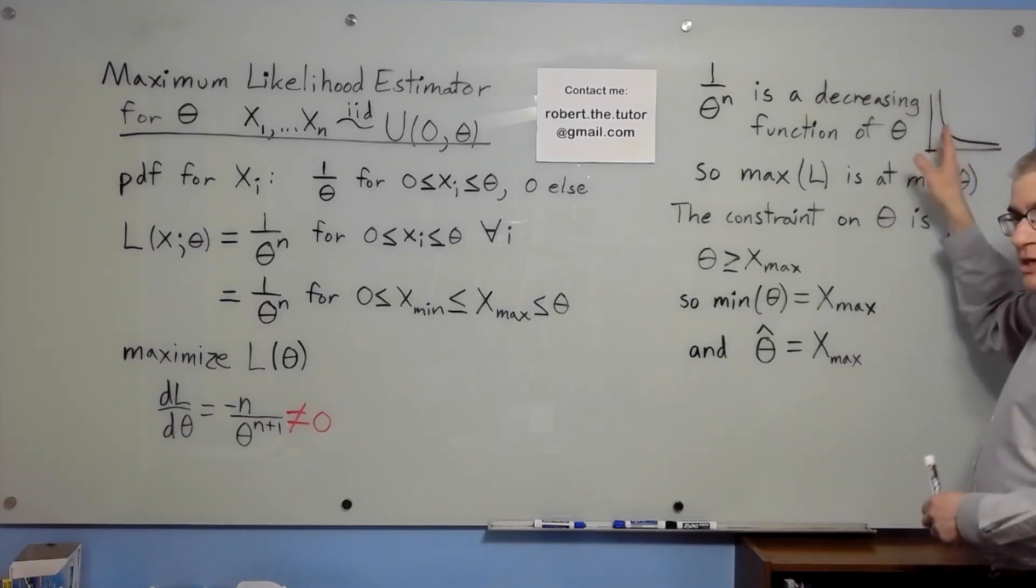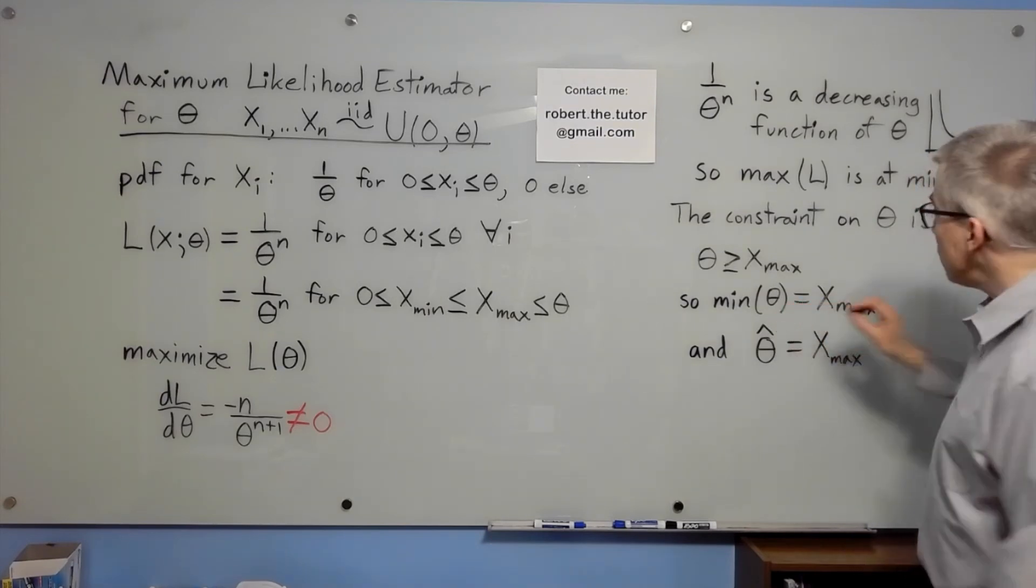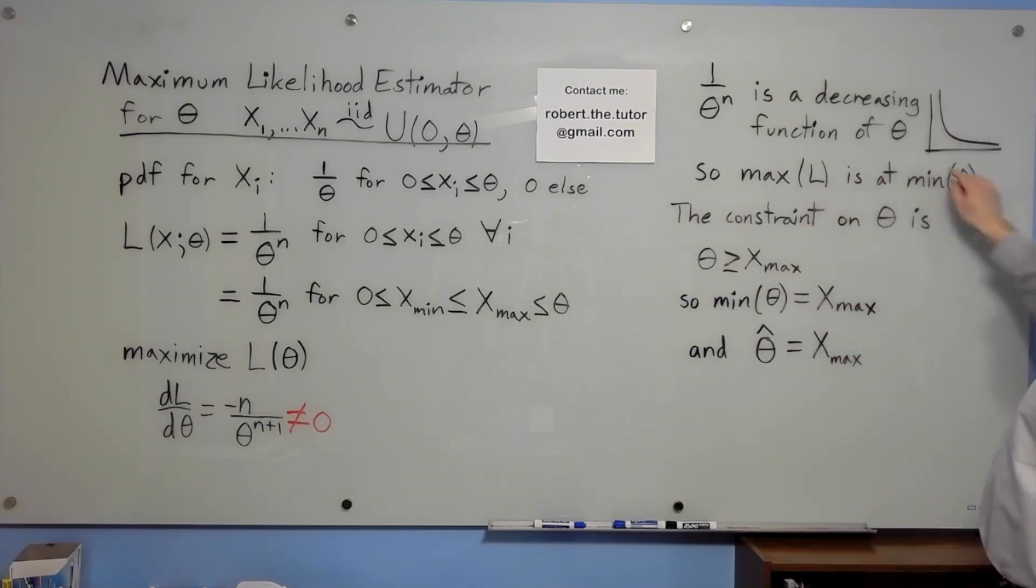But we can still find the maximum that is allowed. The maximum likelihood is going to occur at the minimum theta, because the lower theta gets, the higher the likelihood gets.